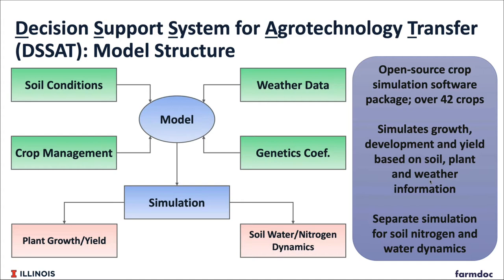The model simulates crop growth and development and gives you crop yield based on soil conditions, plant, and weather information. Inputs to the model include soil information like hydraulic conductivities and soil water properties, crop management like planting and harvest dates, tillage timing and practice, fertilizer application rate and timing and method. The minimum weather data needed is daily rainfall and daily temperature. The model also accounts for differences between crop varieties, which have different energy coefficients. The model simulates water and nutrient dynamics and crop growth on a daily time schedule, giving you plant growth, plant yield, soil water, and nitrogen dynamics as outputs.